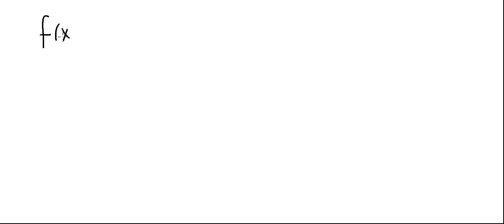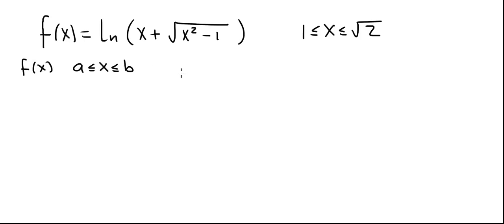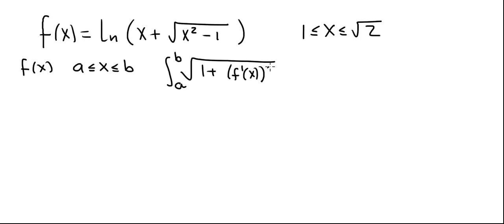Let f of x equal to the natural log of x plus the square root of x squared minus 1, for x greater than or equal to 1 and less than or equal to square root of 2. We're going to find the arc length of f over this interval. Recall that when we have a function f of x defined over the interval from a to b and this function is differentiable, the arc length formula is the integral from a to b of the square root of 1 plus f prime of x squared.